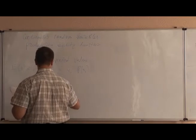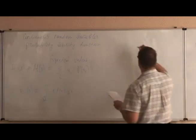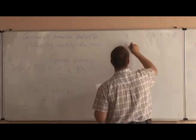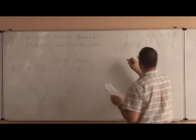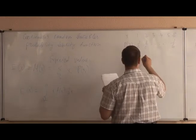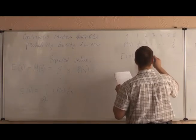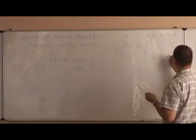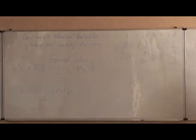For example, if X takes values 1, 2, 3, 4, 5, 6 each with probability 1/6 — as with a fair die — then the mean value is the sum from i equals 1 to 6 of i times 1/6, which equals 3.5. This is the mean value when you throw the dice.